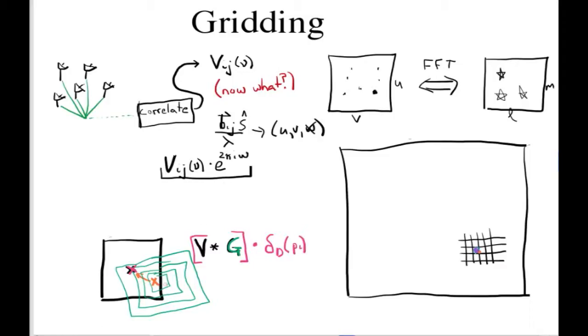So what was G in this case, where we just chose to put our visibility sample directly into the center of the nearest pixel? Well, it turns out that convolution G, that convolution kernel, is actually just a boxcar of the width of a pixel.